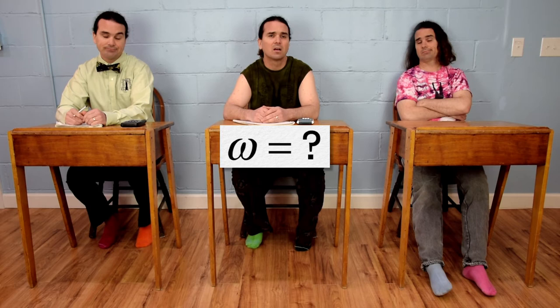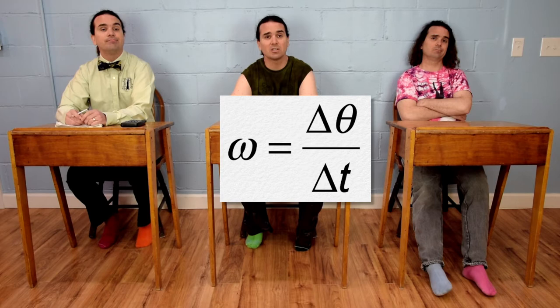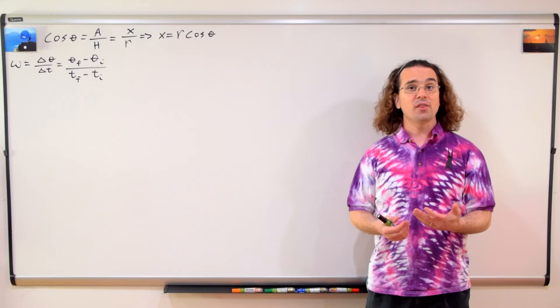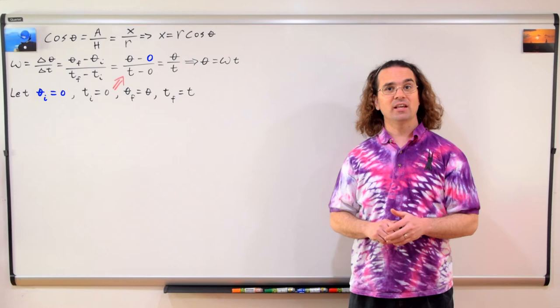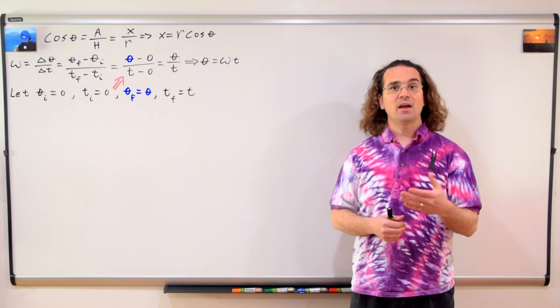Angular velocity equals angular displacement over change in time. And delta always means final minus initial. In other words, angular velocity equals angular position final minus angular position initial, divided by time final minus time initial. And if we let the initial angular position equal zero, the initial time equal zero, the final angular position equal theta, and the final time equal t, then theta equals omega times t.